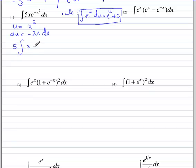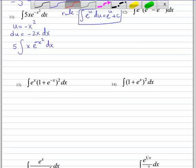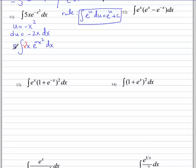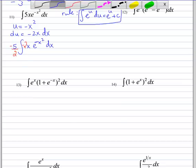And we need the negative 2 so that we will have du as one of the factors of the question. So we're going to multiply by negative 2, and then divide on the outside by negative 2. So now let's rewrite the question in terms of u and du.